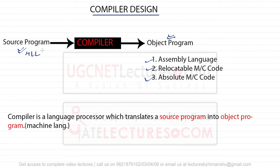You can also represent it this way: the source program can be a high-level language program, and the object program you get can be a low-level language program - assembly code, relocatable machine code, or absolute code. A pre-processor is used to do pre-processing before compilation. The pre-processor converts all the user convenience code into intermediate code in a format understandable by the compiler.